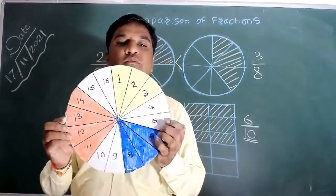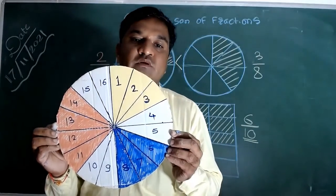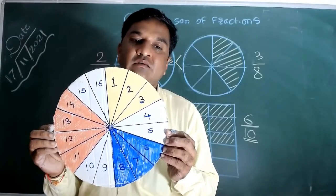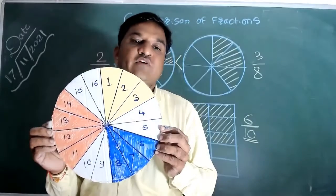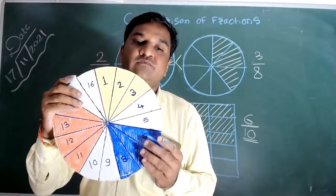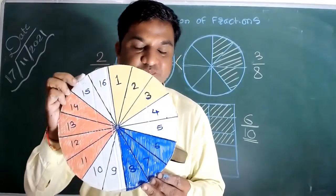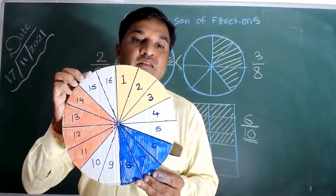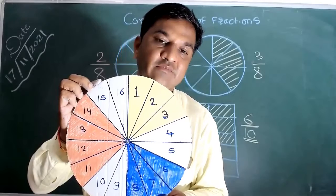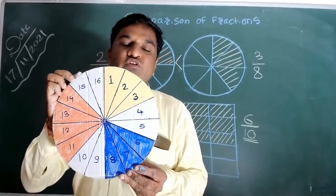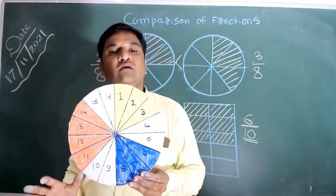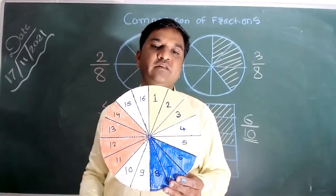Now let's take one more example. We'll look at another circular disk divided into 16 equal parts. 3 parts are shaded yellow, 2 parts are white, then 3 parts with blue, 2 parts white, and 4 parts with red. The fraction of yellow is 3 by 16 and the fraction of blue is also 3 by 16 — the yellow and blue shaded portions are of equal size. Comparing red and yellow: the fraction of red is 4 out of 16 and the fraction of yellow is 3 out of 16. Clearly the red portion is shaded more, so the fraction of red — 4 by 16 — is greater than 3 by 16. For comparing like fractions it is very easy because the denominators are equal and we just compare using their numerators.